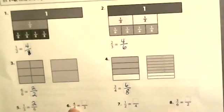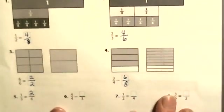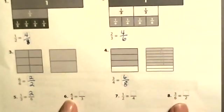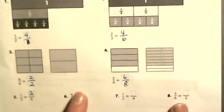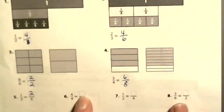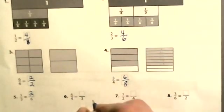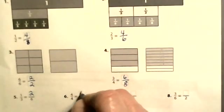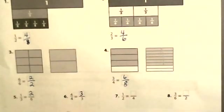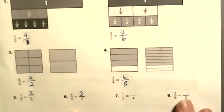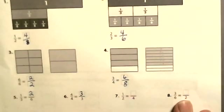This one is showing a whole — four-fourths. What do we know about a whole when we write it as a fraction? It has to have the same numerator and denominator. So this numerator must be three — three-thirds. Three-thirds is the same as a whole, and four-fourths is the same as a whole.